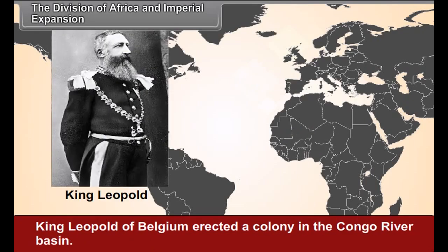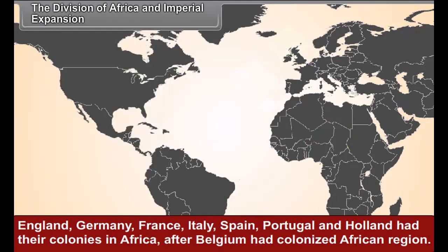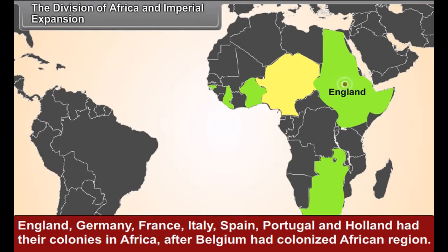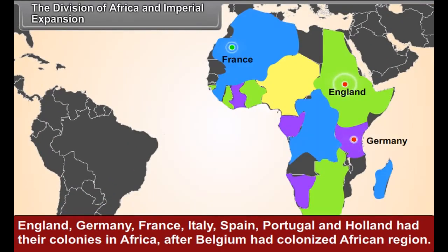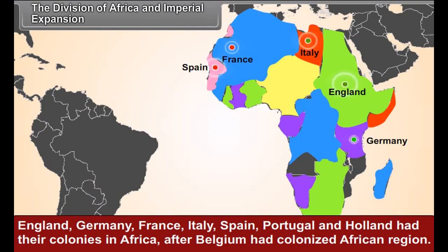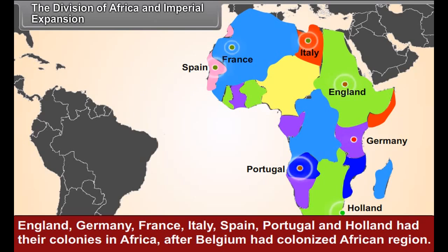King Leopold of Belgium erected a colony in the Congo River Basin. England, Germany, France, Italy, Spain, Portugal and Holland all had their colonies in Africa.